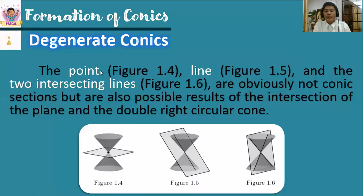In analytic geometry, we also have what we call degenerate conics. The degenerate conics are not conics, but these are possible results in the intersection of the plane and the double right circular cone.